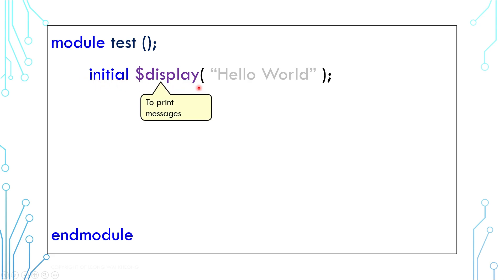Dollar Display is a system function provided by Simulation tool. It is used to print messages. And finally, Hello World is the message. Before I forget, Initial block, Dollar Display, and Hello World are pure simulation code. They cannot be synthesized into a hardware design.